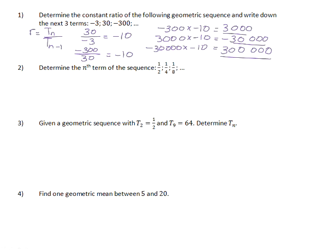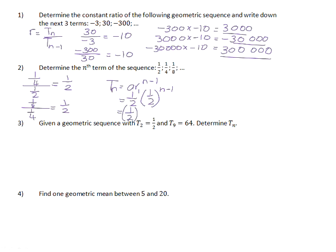Question two: determine the nth term of the sequence one-half, one-quarter, one-eighth. They don't tell us what kind of sequence it is, but if we investigate the ratios between successive terms — term 2 divided by term 1: a quarter divided by a half is a half, and an eighth divided by a quarter is also a half. So this is a geometric pattern with a constant ratio of a half. The general term is ar to the n minus 1. Since a equals one-half and r equals one-half, and they have the same base, we add exponents to get one-half to the power of n.